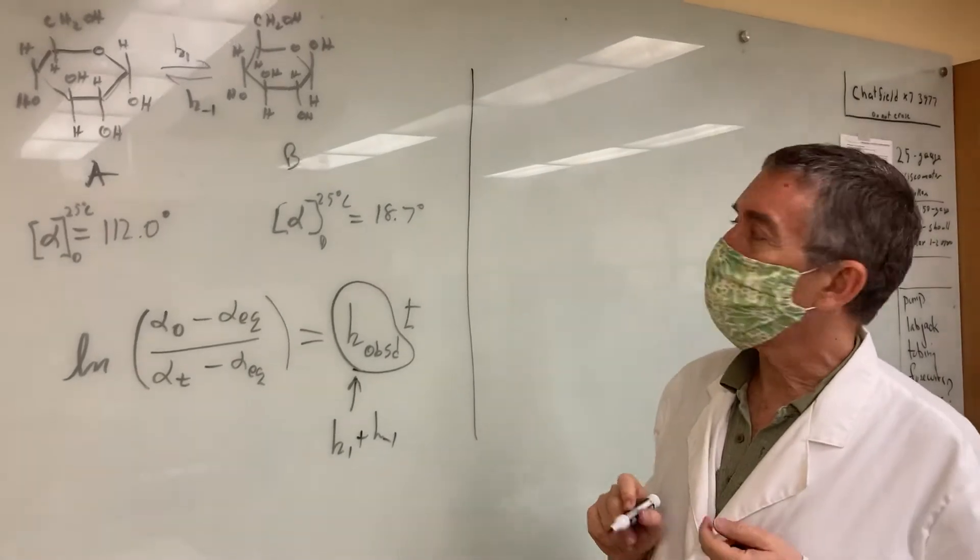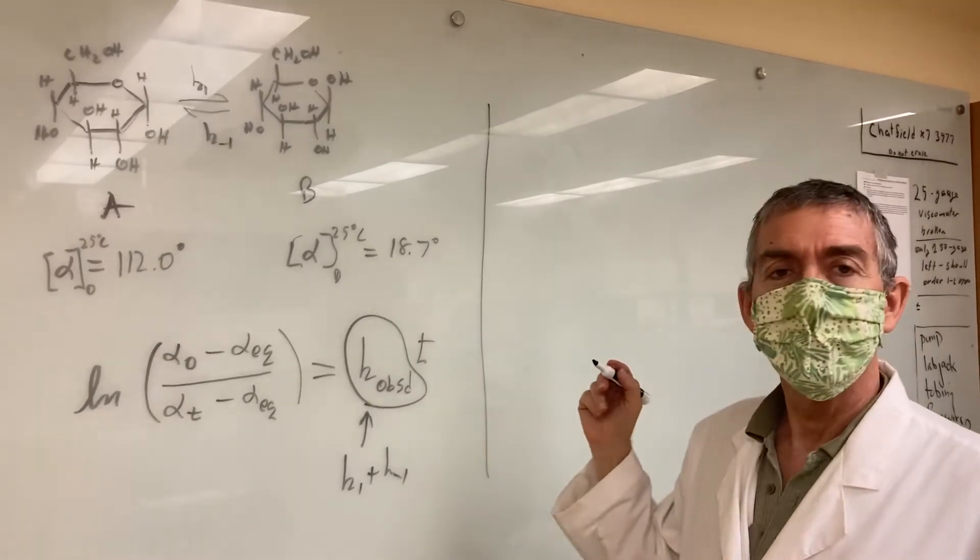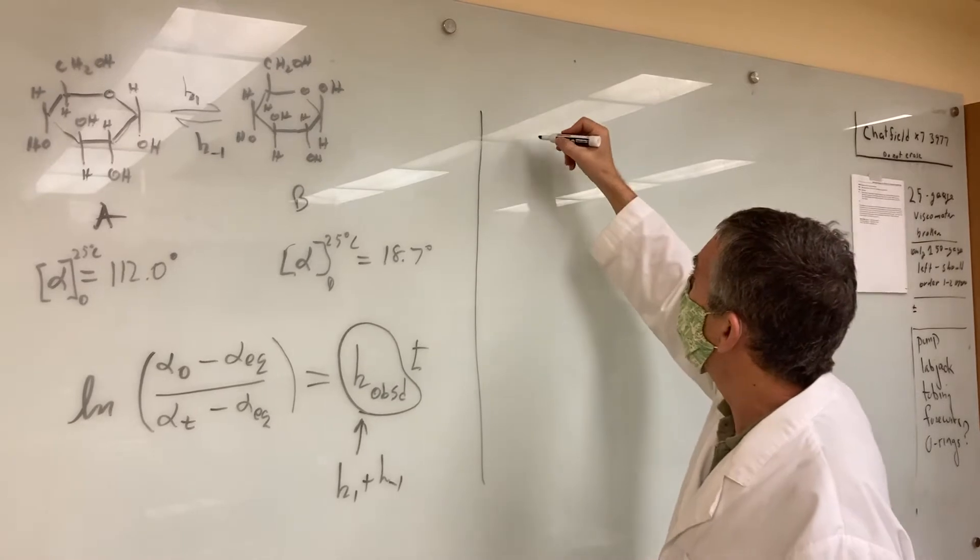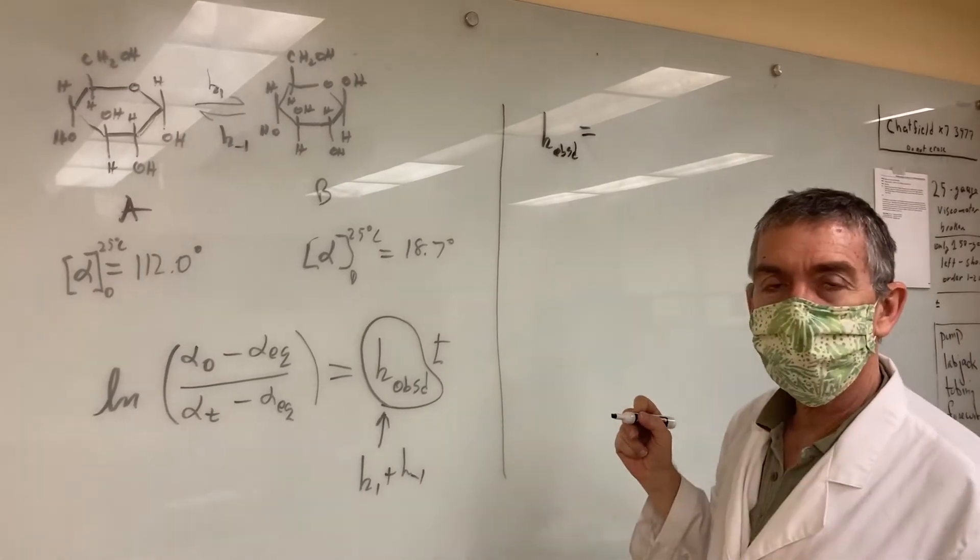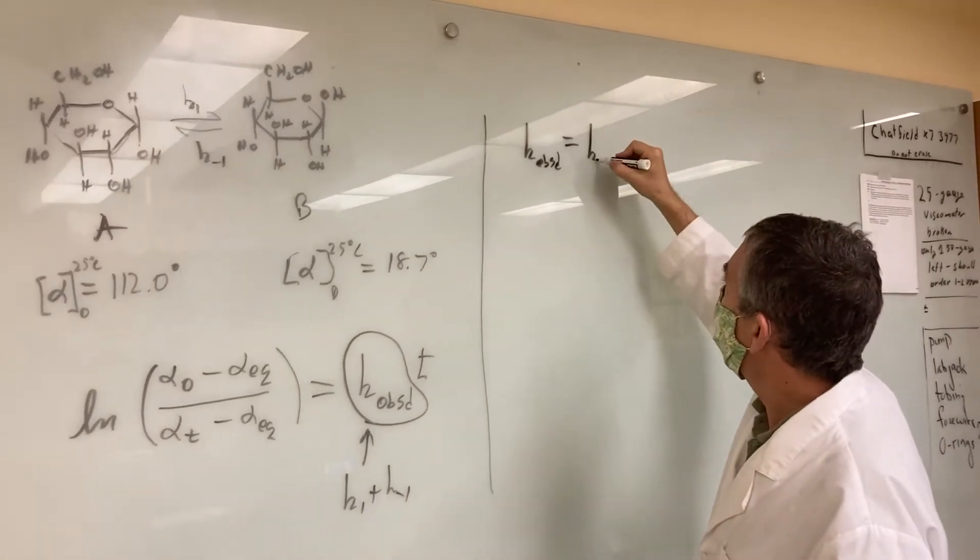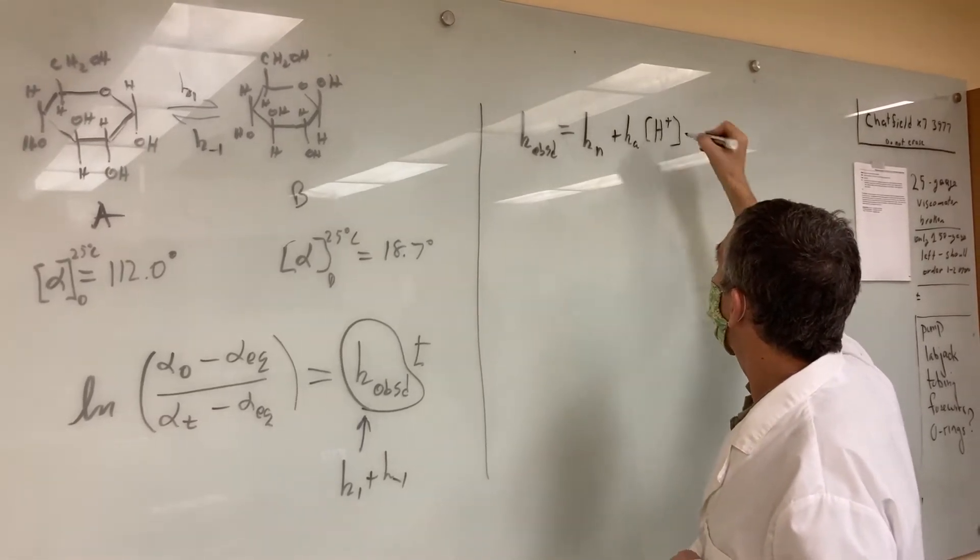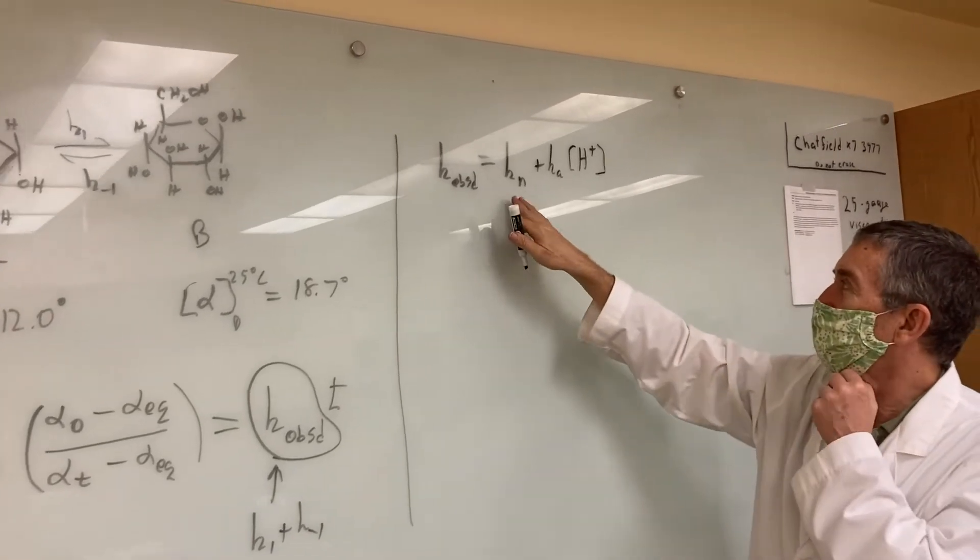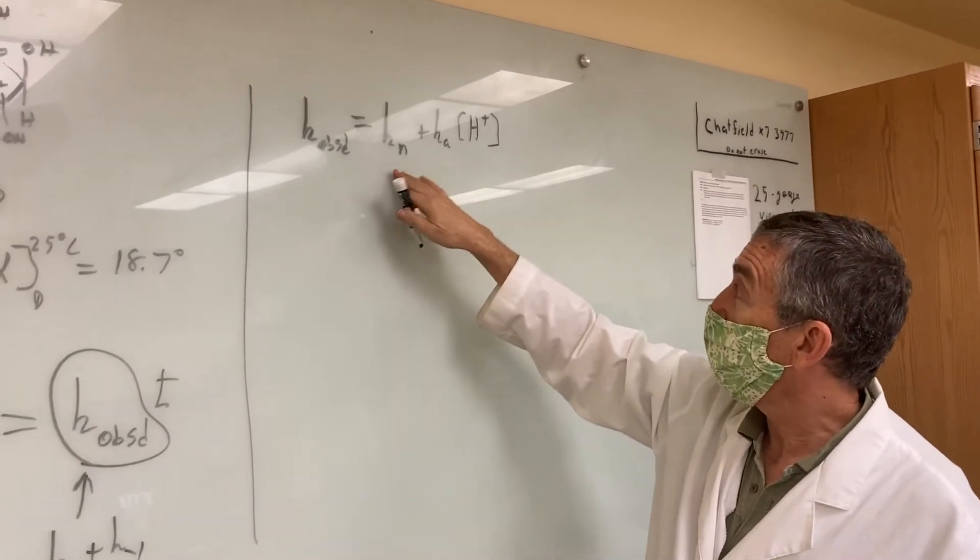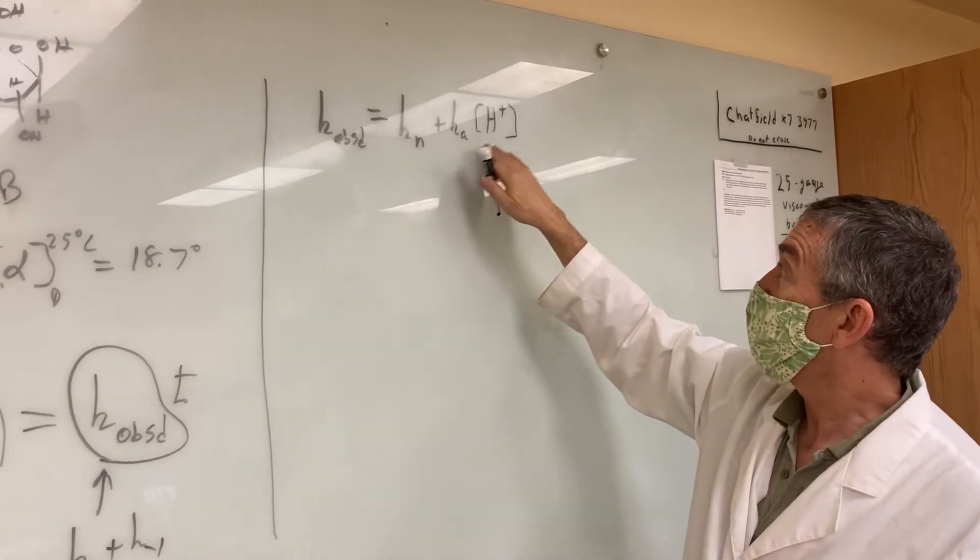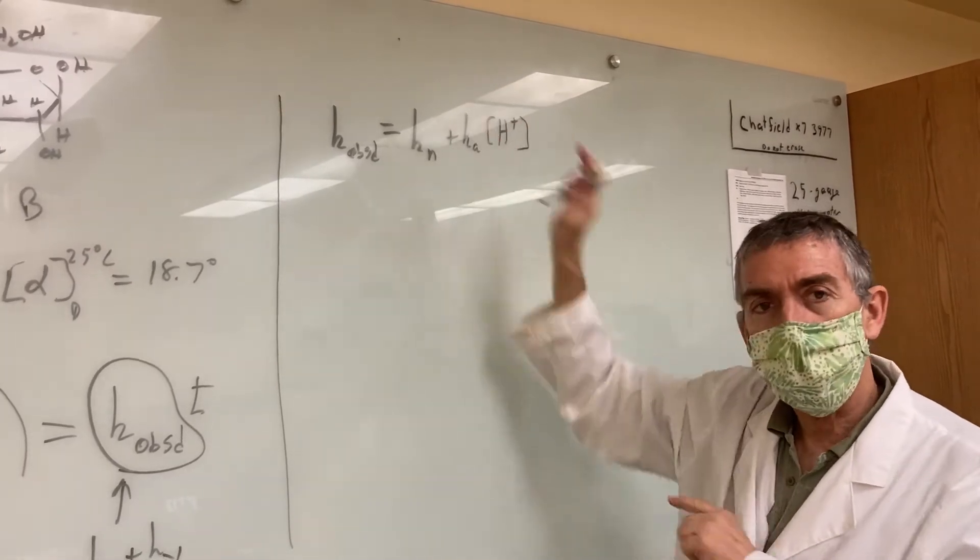Now, it so happens that this reaction can be catalyzed by acid, or as far as that goes by base, but we're only interested in acid. So, so what we're going to do, well, so first of all, k observed, if you really get down to it, can be written this way. So k observed is a rate constant for a neutral solution, plus a different rate constant, kA. This is kN, this is kA for acid, that times the concentration of H+. Now you can work out the theory, but let's just take that for granted for right now.